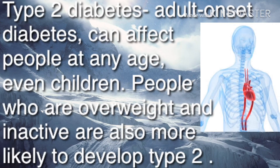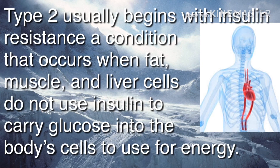Type 2 diabetes, or adult onset diabetes, can affect people at any age, even children. People who are overweight and inactive are more likely to develop it. Type 2 usually begins with insulin resistance — a condition where fat, muscle, and liver cells do not use insulin to carry glucose into the body's cells for energy.